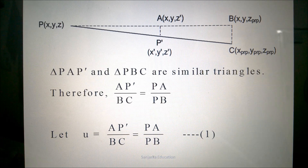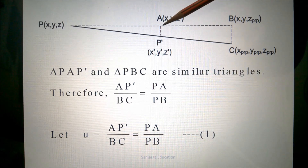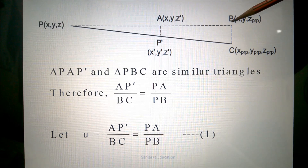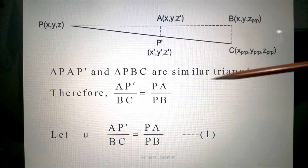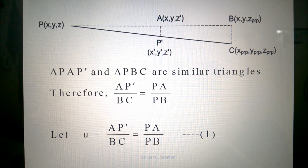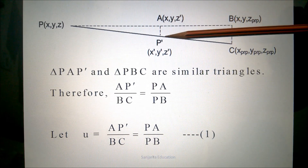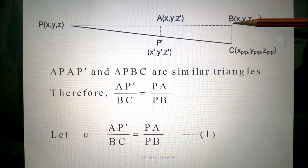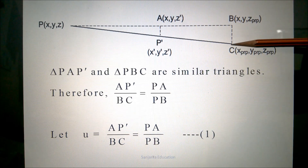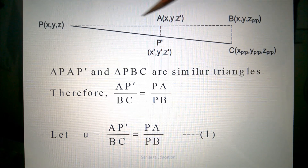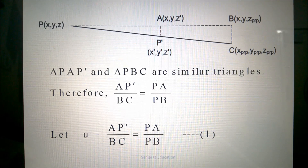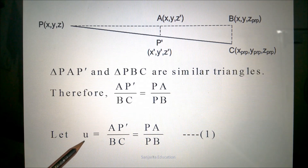In this diagram, you can see there are two similar triangles: one is P-A-P dash, and another is P-B-C. Therefore, I have identified these two similar triangles. By the property of similar triangles, A-P dash divided by B-C is equal to P-A divided by P-B. I consider this ratio to be equal to U.